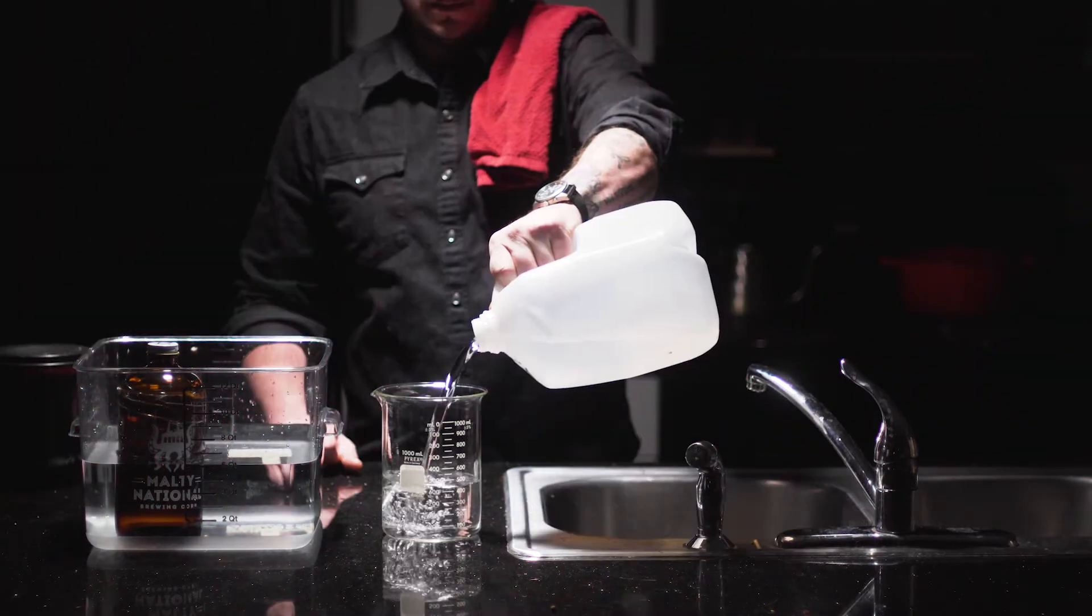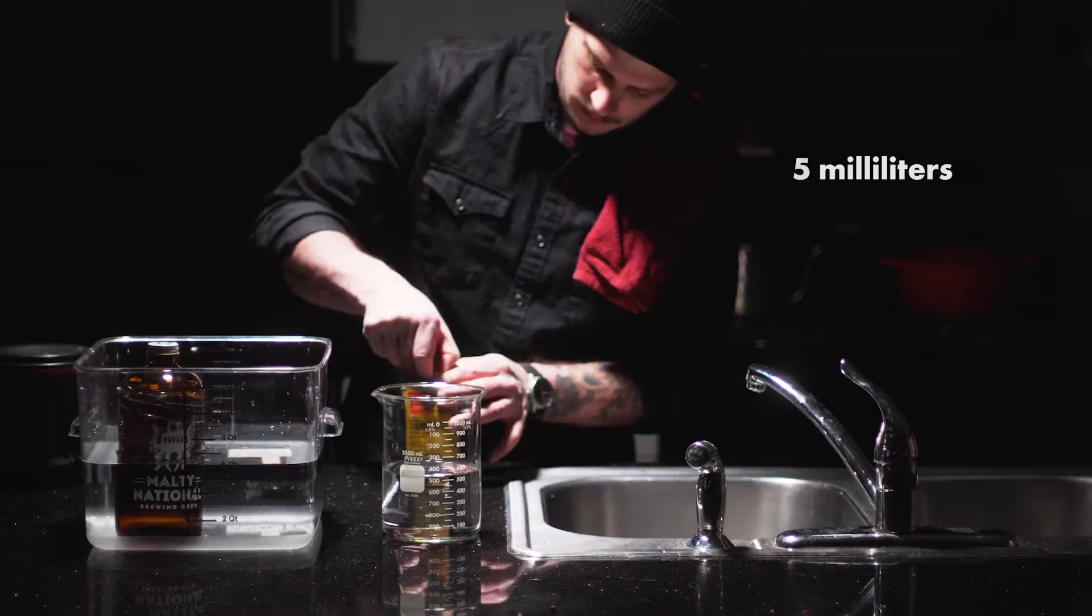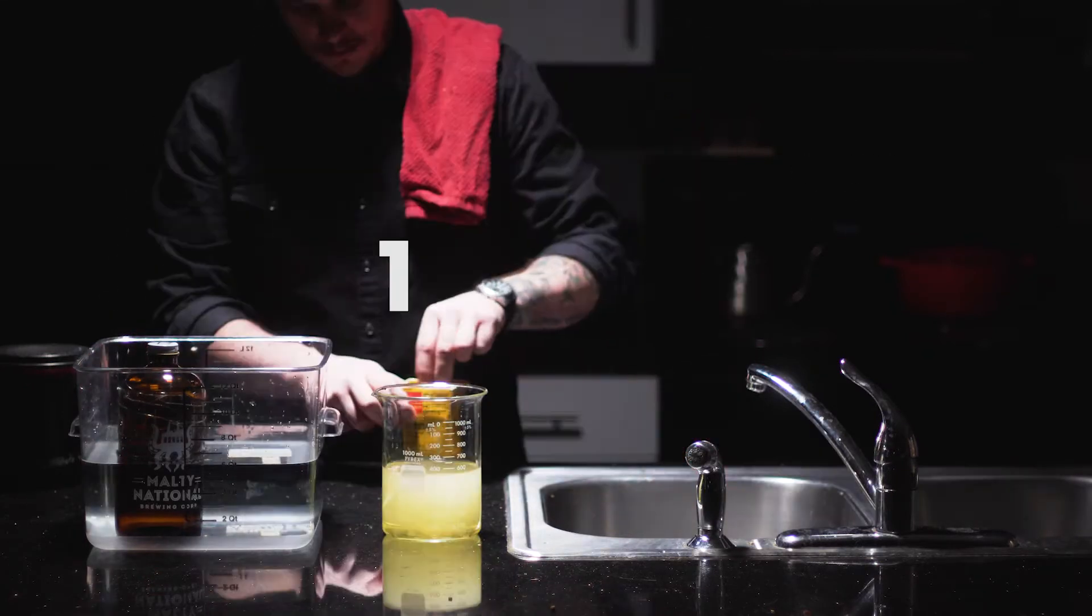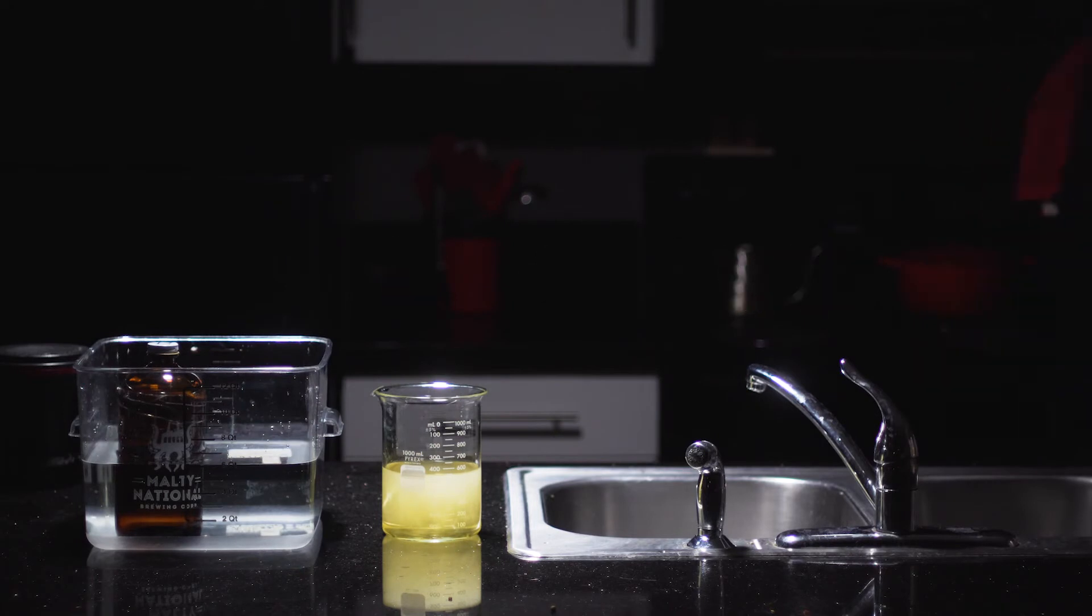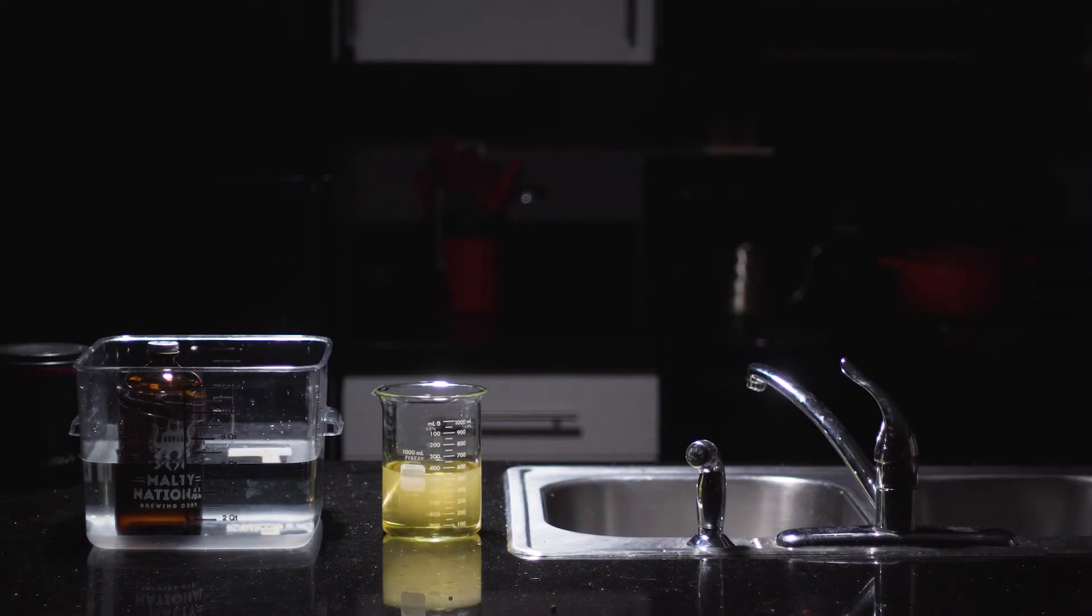Then we mix the developer. Grab your syringe and pull up 5mm per roll in your tank and mix it 1 plus 100. That's 5 milliliters developer with 500 milliliters of water.